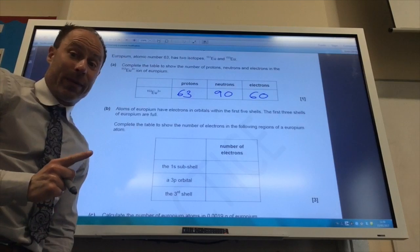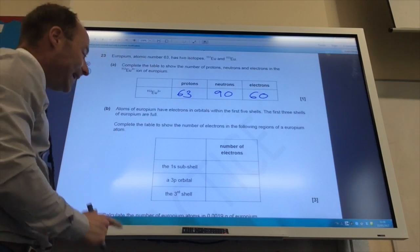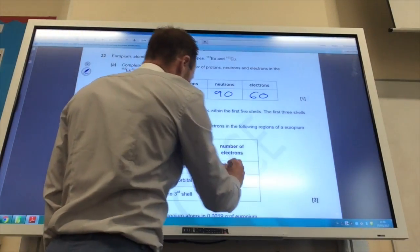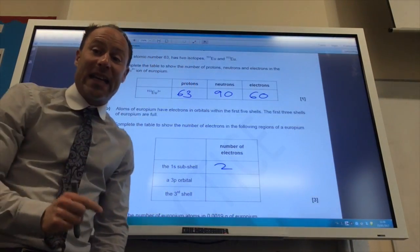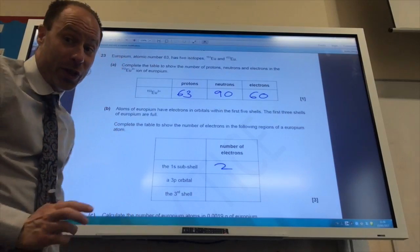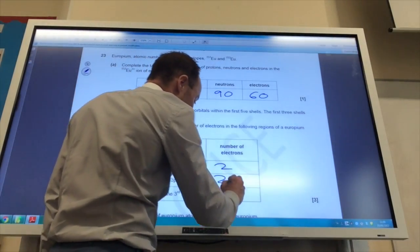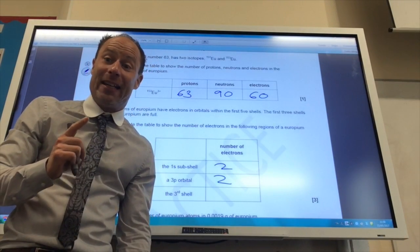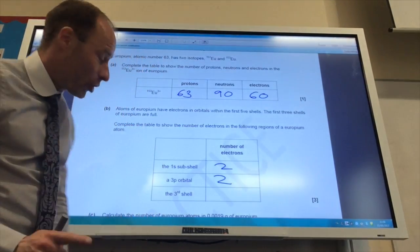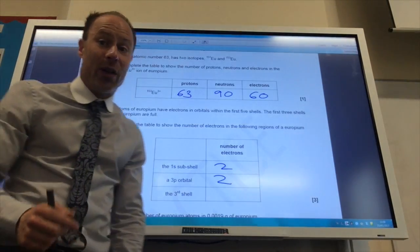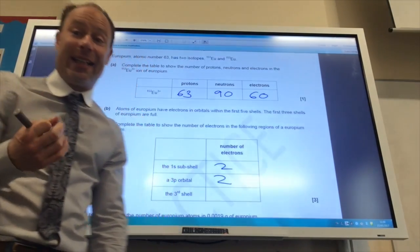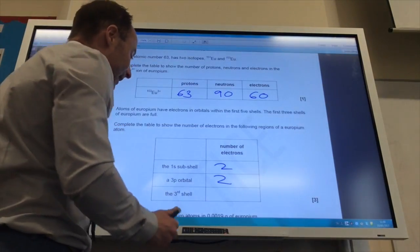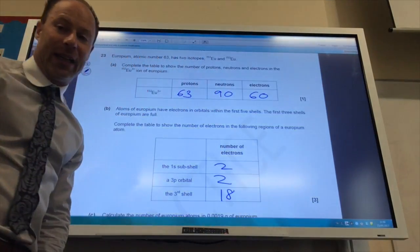Now, this one catches a lot of people out. How many electrons are in a 1s subshell? An s subshell can only hold two electrons. A 3p orbital can also only ever hold two electrons. In a 3p subshell there are six electrons, but in a 3p orbital there are only two. In the third shell you've got an s subshell, a 3p and a d, so 2 plus 6 plus 10 gives you a total of 18 electrons.